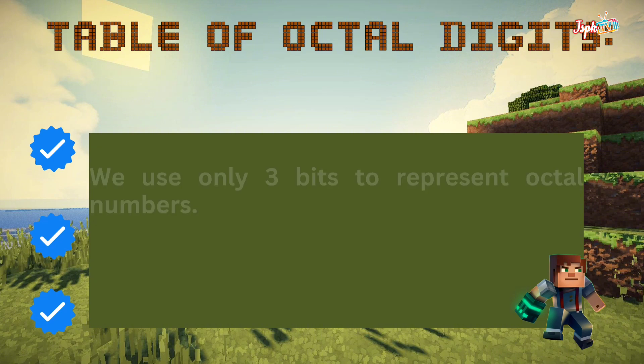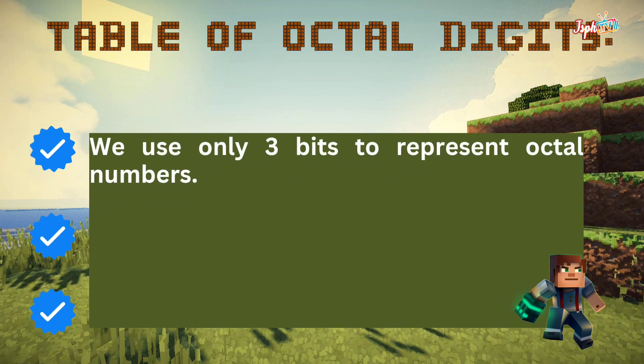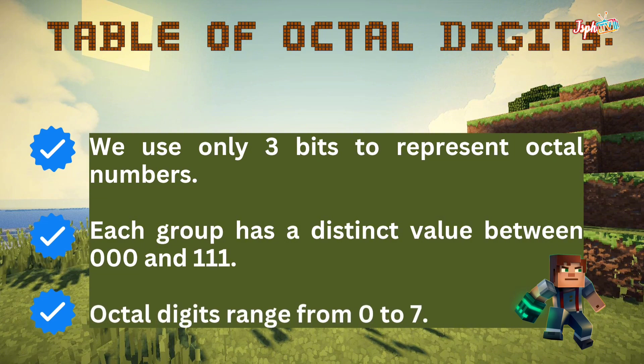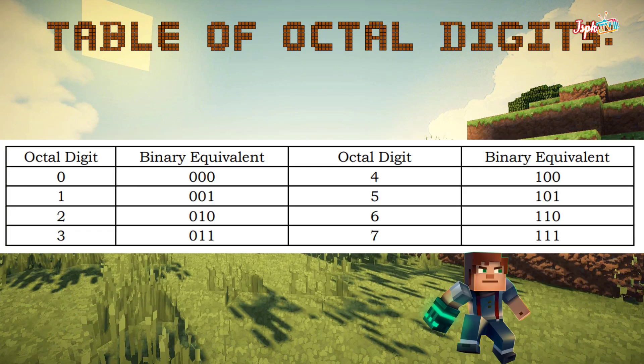For the table of octal digits, we use only 3 bits to represent octal numbers. Each group has a distinct value between 000 and 111, and octal digits range from 0 to 7. This is the table of octal digits, from 0 to 7.